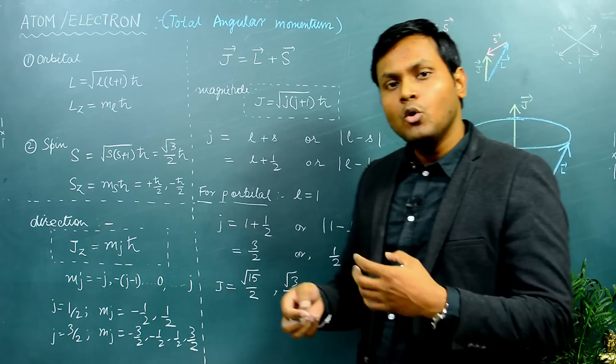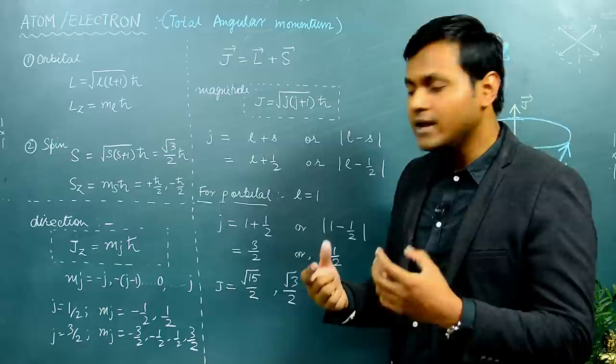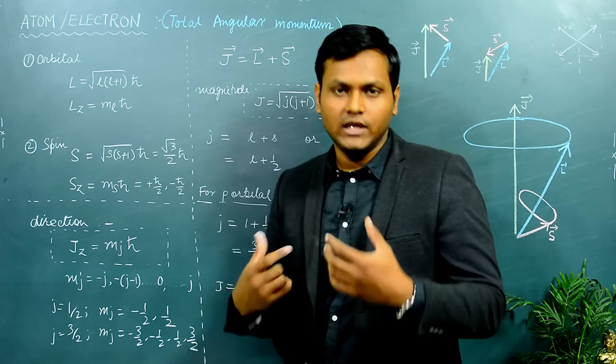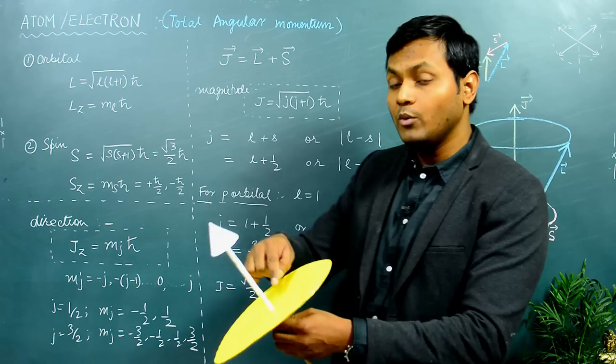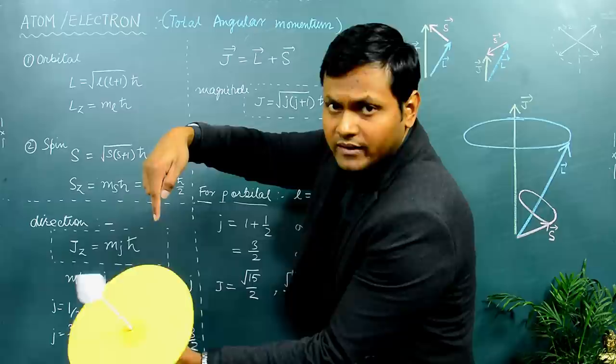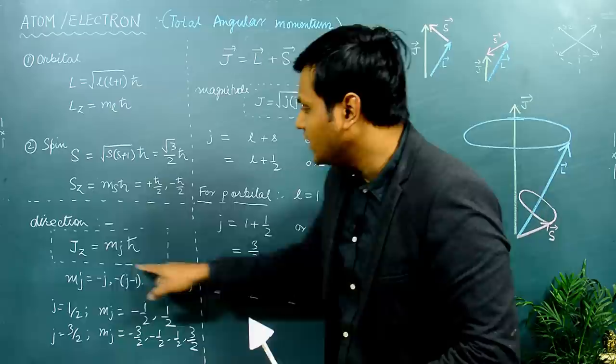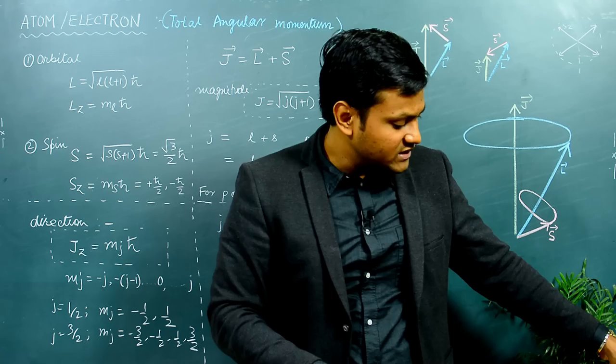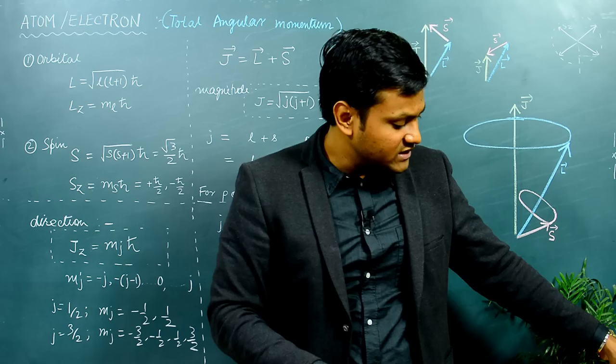The direction of the total angular momentum is also quantized, given by Jz equals mj times ℏ, where mj can have values from minus j to plus j. For j equal to 1/2, mj is minus 1/2 and plus 1/2. For j equal to 3/2, mj can have values of minus 3/2, minus 1/2, plus 1/2, and plus 3/2. These correspond to certain orientations in three-dimensional space where the total angular momentum precesses around a z-axis.